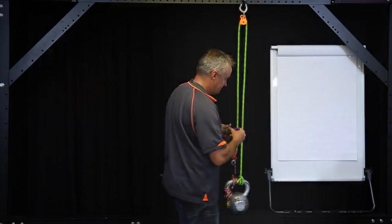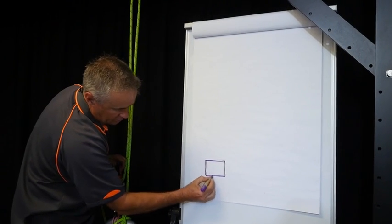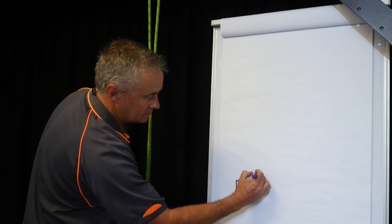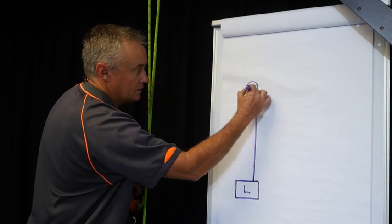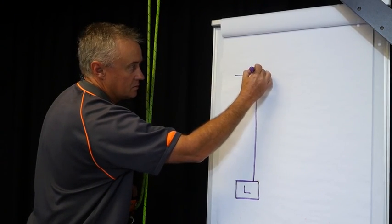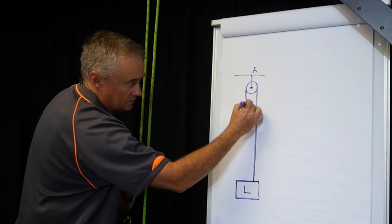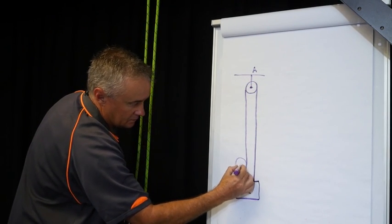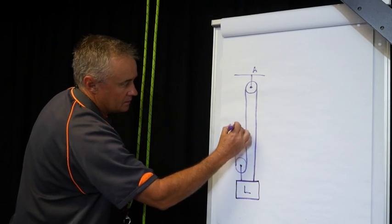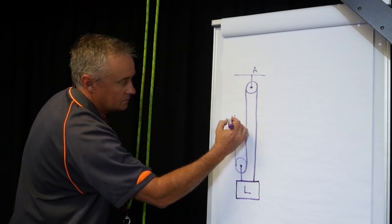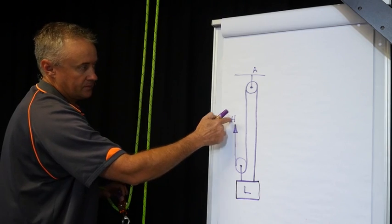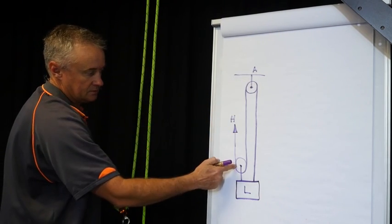So let's see what this looks like on paper. We usually draw a box for our load — some people draw a triangle, it really doesn't matter. We have a rope that comes up and goes through a pulley. That pulley is attached to an anchor. The rope runs back down through our travelling pulley and runs up to our haul. So: our load, our anchor, our haul, our stationary pulley, our travelling pulley.